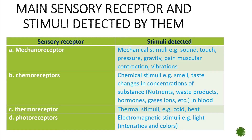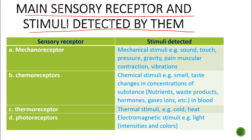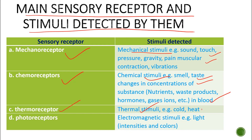The main sensory receptors and their detected stimuli are: mechanoreceptors, which detect mechanical stimuli such as sound, touch, pressure, gravity, pain, muscular contraction, and vibrations; chemoreceptors, which detect chemical stimuli such as smell, taste, and changes in concentration of substances and nutrients in blood; thermoreceptors, which detect thermal stimuli — either cold or heat; and photoreceptors, which detect electromagnetic stimuli including light, light intensities, and colors.